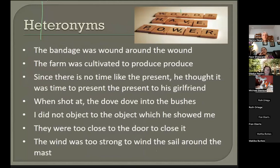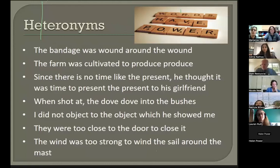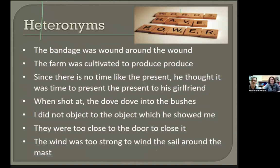Moving on to heteronyms — words that look the same on paper but are pronounced differently and mean totally different things. Examples: 'The bandage was wound around the wound.' 'The farm was cultivated to produce produce.' 'Since there is no time like the present, he thought it was time to present the present to his girlfriend.' 'When shot at, the dove dove into the bushes.' 'They were too close to the door to close it.' 'The wind was too strong to wind the sail around the mast.'